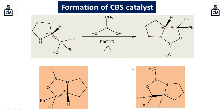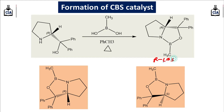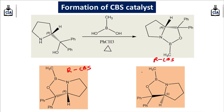Similarly, we get another CBS catalyst, that is the R-CBS catalyst. If we treat the R-proline derivative with this boron derivative in the presence of toluene as a solvent and heat the mixture, we get the R-CBS catalyst. So finally in this reaction we have two types of catalyst: one is the R-CBS and the other is the S-CBS catalyst.